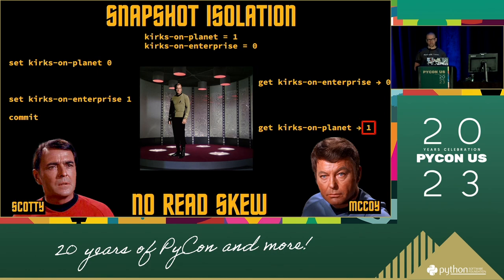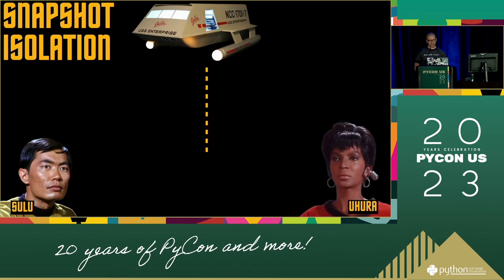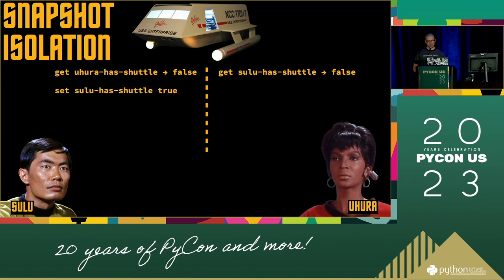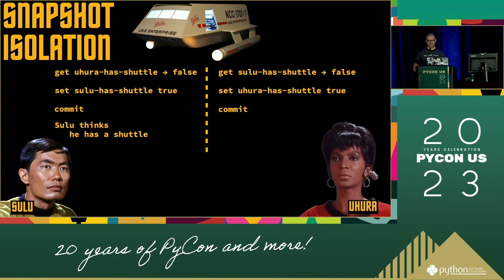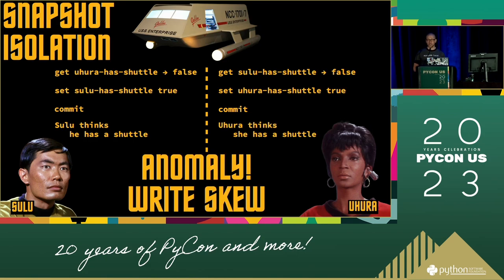Snapshot isolation has a few anomalies that it still allows. New story, new characters — it's time for some shore leave, but there's only one shuttle in the shuttle bay. Sulu and Uhura both want it. Sulu checks whether Uhura has claimed it — no, she hasn't. Uhura checks if Sulu has. Sulu then claims the shuttle, and so does Uhura. Sulu commits and thinks he has claimed the shuttle, and so does Uhura. This is an anomaly called write skew — you can see how this couldn't happen if the transactions were happening one at a time, but snapshot isolation allows it.